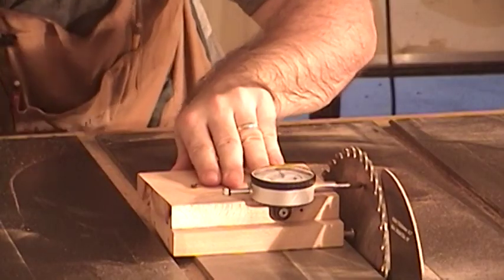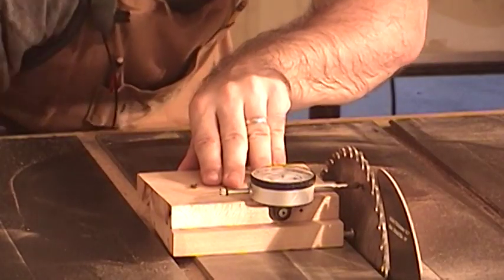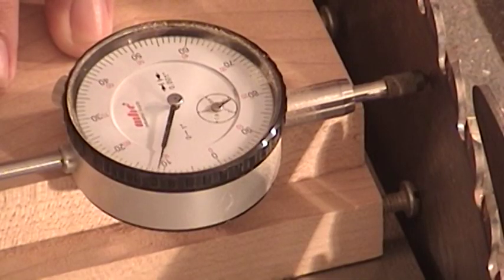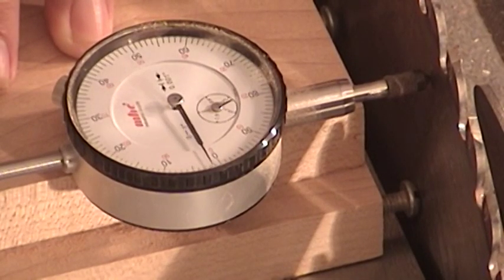With the jig pushed up against the table saw blade, the blade angle is adjusted until the dial indicator face reads zero. At this point, the table saw blade will be at exactly 90 degrees.